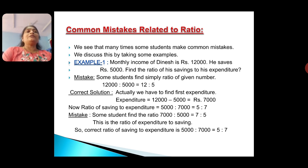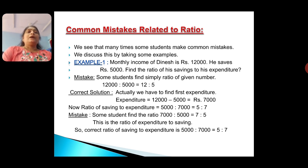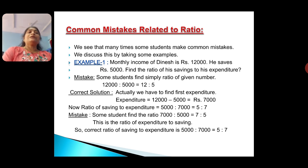Because we have to find the ratio of saving to expenditure, and expenditure is not given. We have to find expenditure first: expenditure equals monthly income minus saving, that means 12,000 minus 5,000 equals Rs. 7,000. Now, ratio of saving to expenditure equals 5,000 ratio 7,000, which gives 5 ratio 7. Another mistake: some students find 7,000 ratio 5,000, that means 7 ratio 5 — this is the ratio of expenditure to saving, not saving to expenditure. The correct ratio of saving to expenditure is 5 ratio 7.